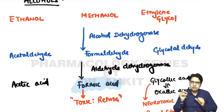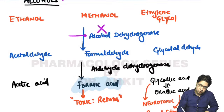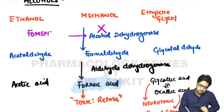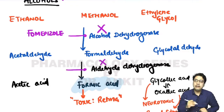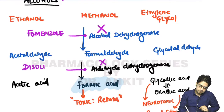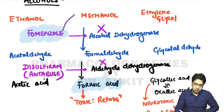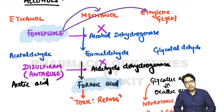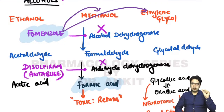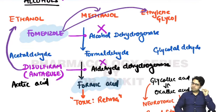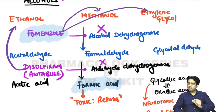There is a drug which inhibits alcohol dehydrogenase enzyme: fomepizole. And there is a drug which inhibits aldehyde dehydrogenase: disulfiram, also known as antabuse. Fomepizole is the drug of choice for methanol and ethylene glycol poisoning. Disulfiram is used in cases of ethanol to prevent alcohol addiction. Note: fomepizole (F) inhibits alcohol dehydrogenase; disulfiram (D) inhibits aldehyde dehydrogenase.